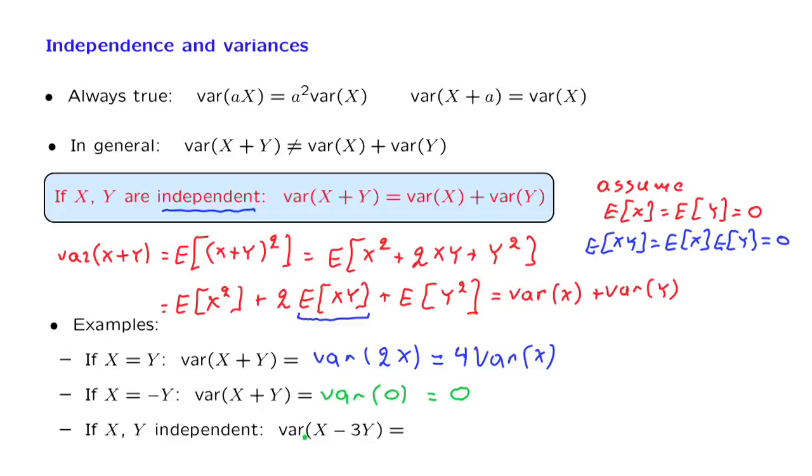As a last example, suppose now that X and Y are independent. X is independent from Y, and therefore, X is also independent from minus 3Y. Therefore, this variance is equal to the sum of the variances of X and of minus 3Y. And using the facts that we already know, this is going to be equal to the variance of X plus 9 times the variance of Y.